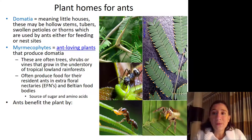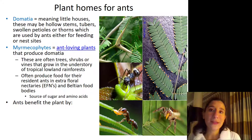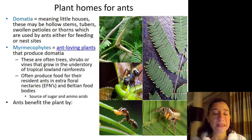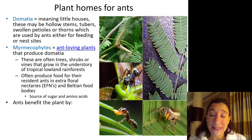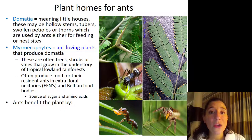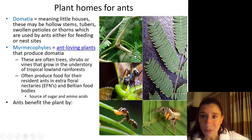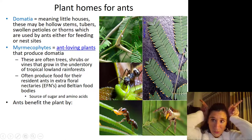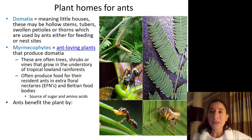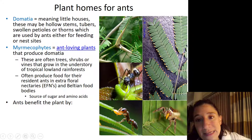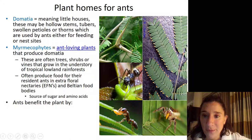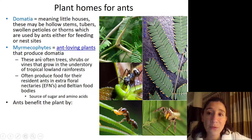Plants will also provide homes for ants — these are really cool mutualisms between ants and plants. Domatia means 'little houses,' and these are hollow stems, tubes, tubers, swollen petioles, or thorns that plants produce and that are used by ants for either feeding or nest sites. Shown here is the aptly named bull's horn acacia plant. You can see the thorns really do look like the horns of a bull — hollow — and ants will bite a hole in there and make their nest in those cavities.